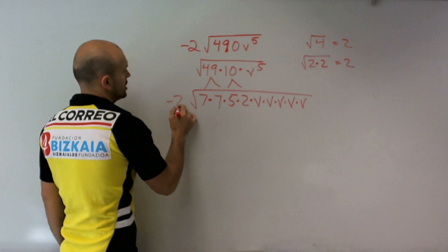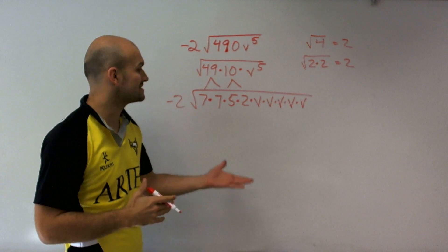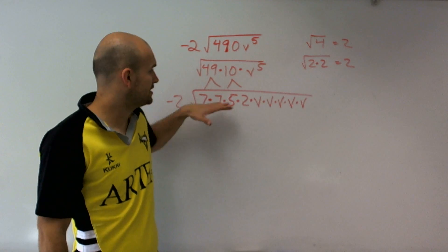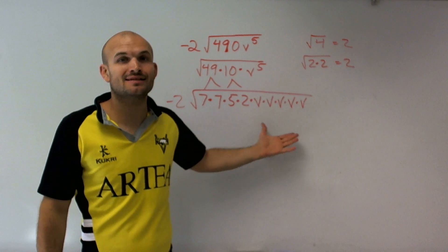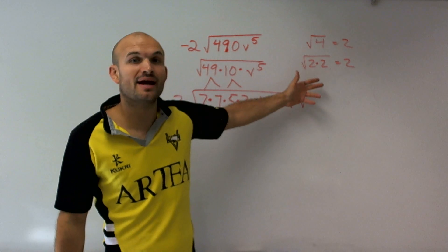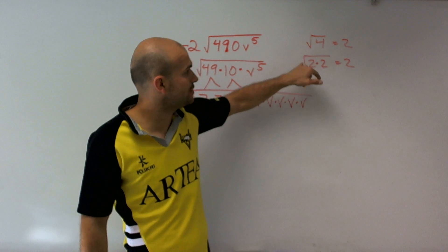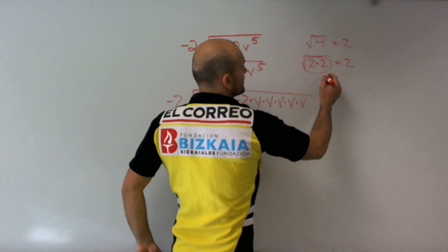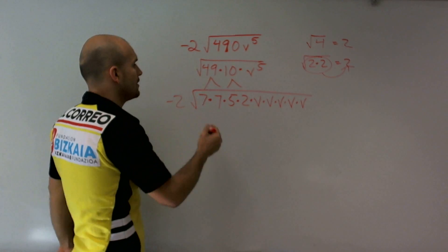This is what we call linearized factored form. What I've done is broken down this radicand to its linear factors. We can't factor any of these numbers any further. Now I'm going to take my pairs of numbers and pull them out, because the square root of 2 times 2 — a pair — equals 2.